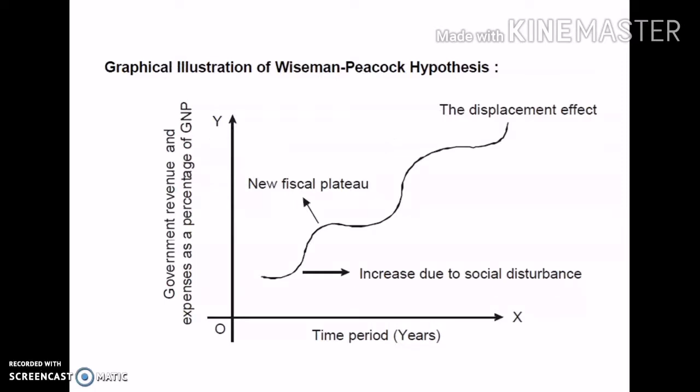The graphical illustration of the Peacock-Weissman hypothesis demonstrates the displacement effect with tax threshold behavior. Time or year is measured along the horizontal axis, while public sector revenue — mostly taxes — and public expenditure as a percentage of gross national product are measured along the vertical axis. The figure reveals that social disturbance causes a relative expansion of the public sector, and the displacement effect helps explain the time pattern by which government growth takes place. This displacement effect does not require that the new higher plateau of expenditure continues the same expenditure composition created by the social disturbance.